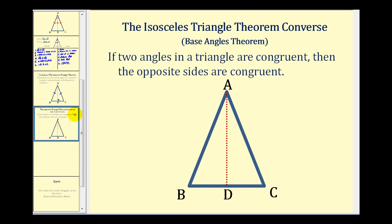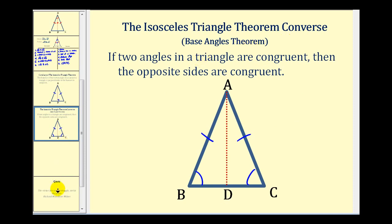I do want to finish by stating the isosceles triangle theorem converse, sometimes called the base angles theorem. If two angles of a triangle are congruent — for example, if angle B is congruent to angle C — then the opposite sides are congruent. So if these two angles were congruent, then segment AB is congruent to segment AC. This is the converse of the isosceles triangle theorem. I hope you found this video helpful.